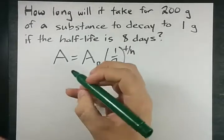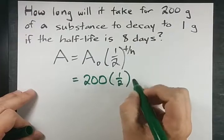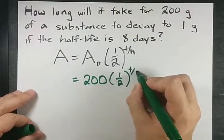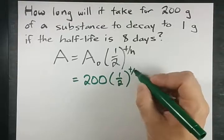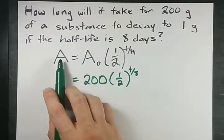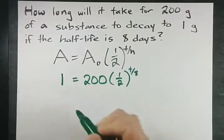So we want 200 grams to decay. We don't know how long it's going to take but we do know that the half-life is 8 days. We'll just keep in mind that our unit for time here is days. And the final amount after this amount of time has gone by is 1 gram.